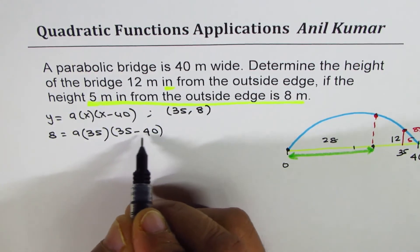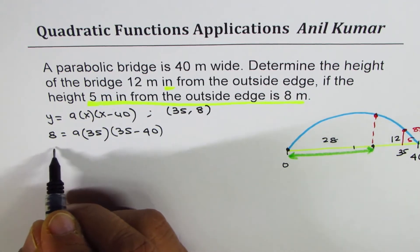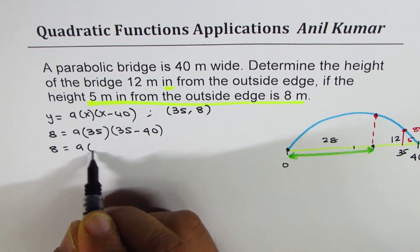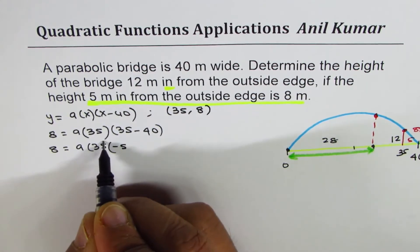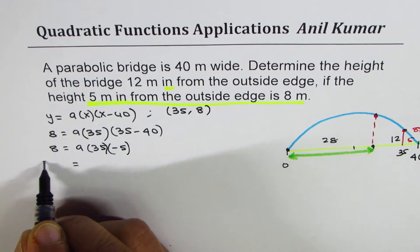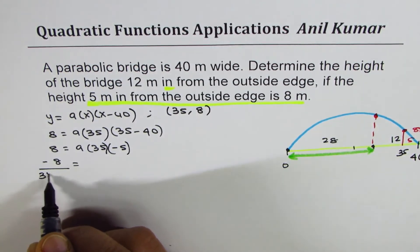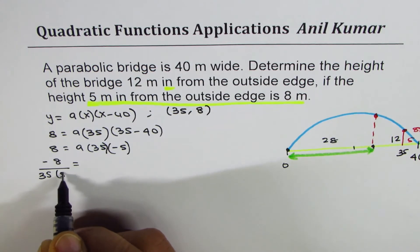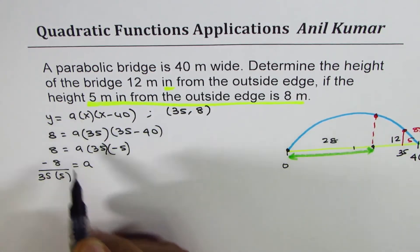From here we get 8 equals to a times 35 times minus 5, or negative 8 over 35 times 5. So that is the value of a.